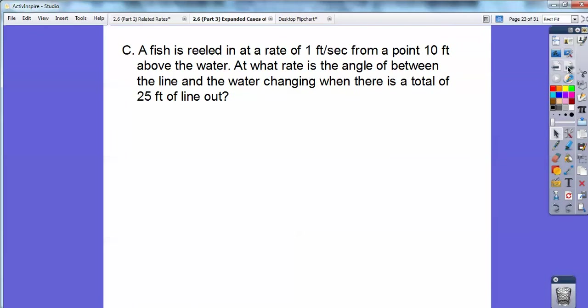I believe I have one more. A fish is being reeled in at a rate of 1 foot per second from a point 10 feet above the water. At what rate is the angle between the line and the water changing when there is a total of 25 feet of line out? So this person is 10 feet above the water. I couldn't find a nice picture of a guy fishing. And I know that he's reeling this in at 1 foot per second. And you guys know why it's negative, right? Because the string is getting shorter and shorter, so it's negative. And he's 10 feet above right there.